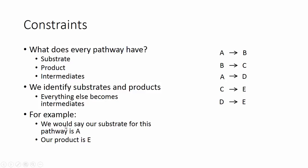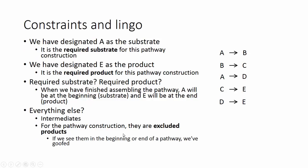For example, we would say that our substrate for this pathway is A and our product is E. And then we can go from there. Then we begin to put lingo together, really, to describe this construction.